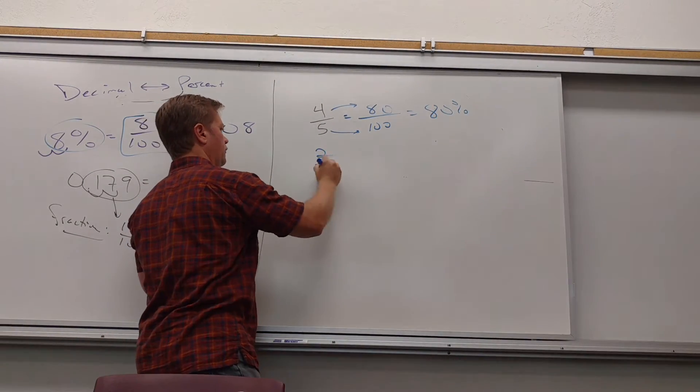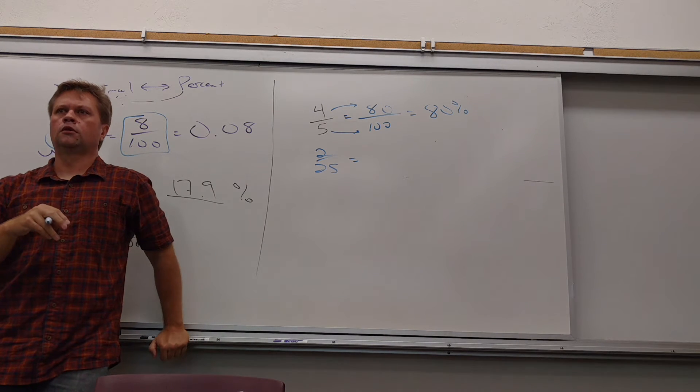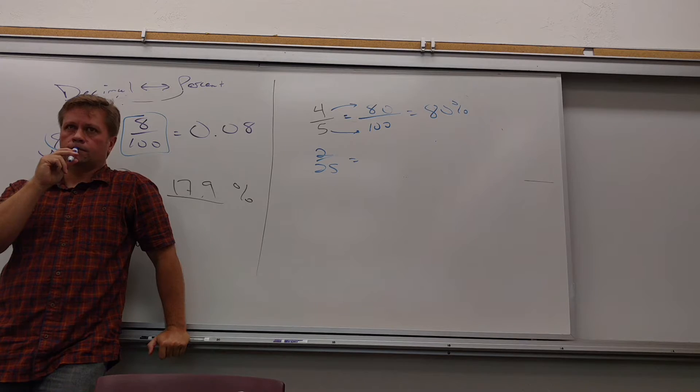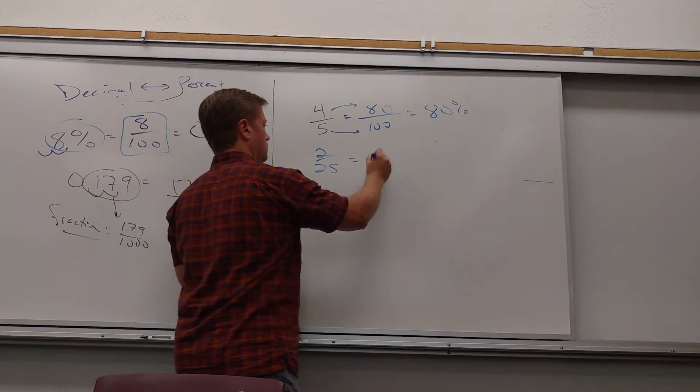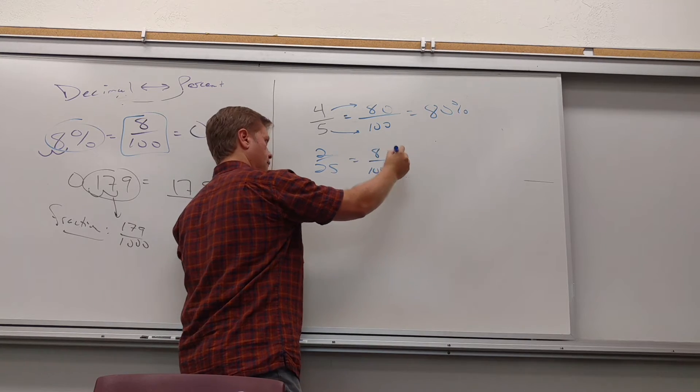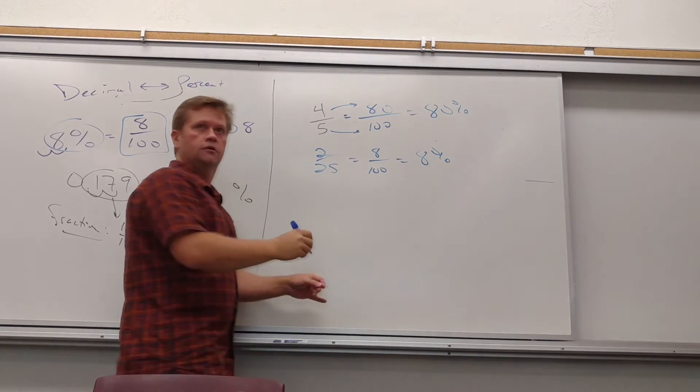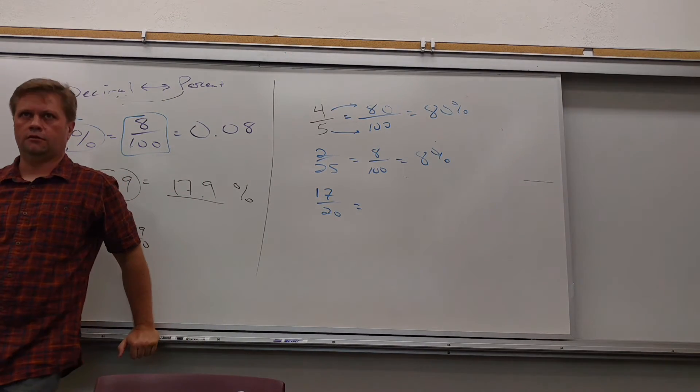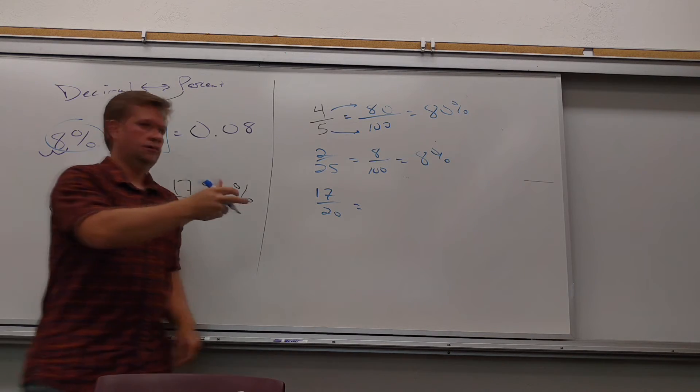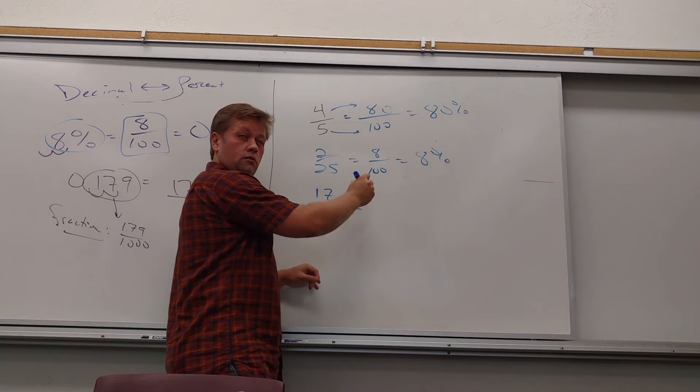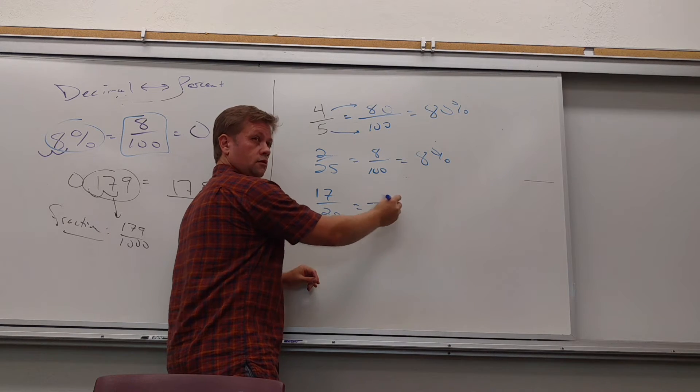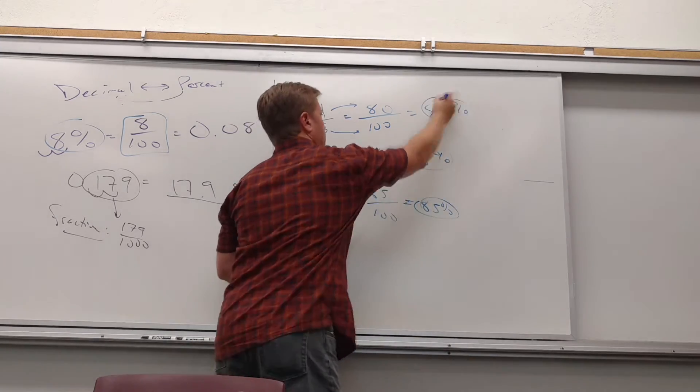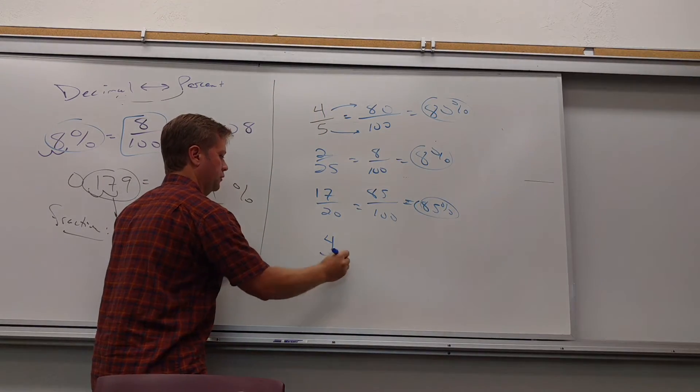So what if I had two twenty-fifths? Four. Multiply by four. Eight. Eight percent. What about if I had seventeen twentieths? Multiply by five. Eighty-five. Eighty-five percent. So what about, what you got Jeff? What about four ninths? Ah, well you know, not every fraction you can make it out of a hundred easy. You can't.